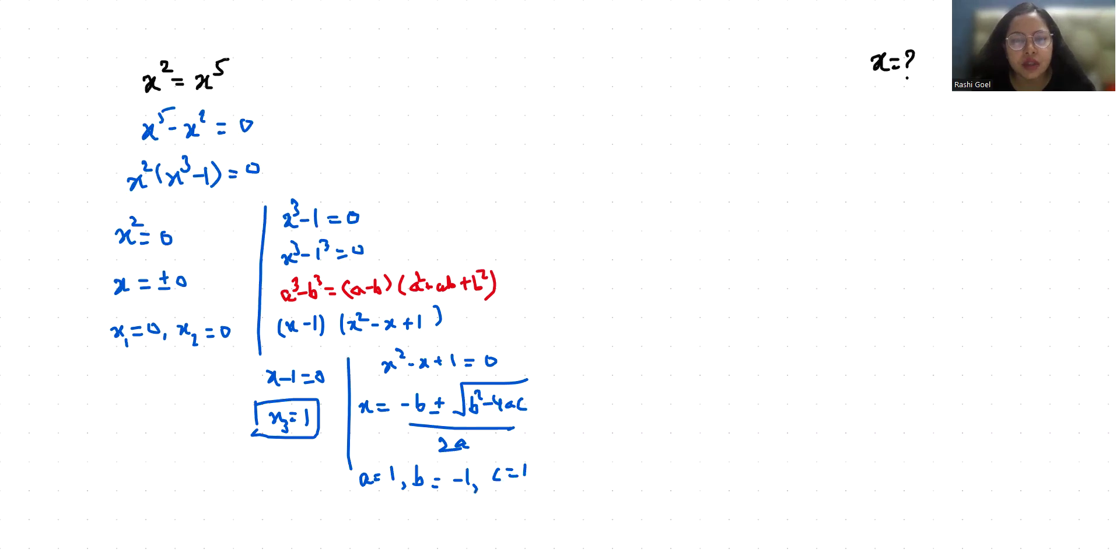So x equals minus negative 1 plus or minus square root of negative 1 squared minus 4 times 1 times 1, all over 2 times 1.